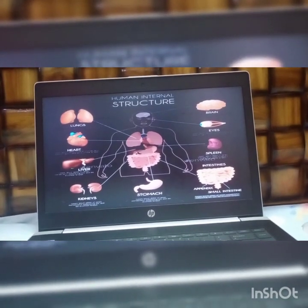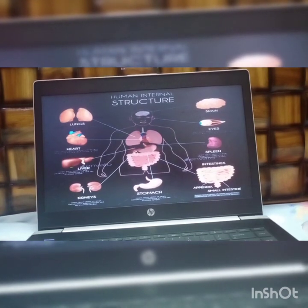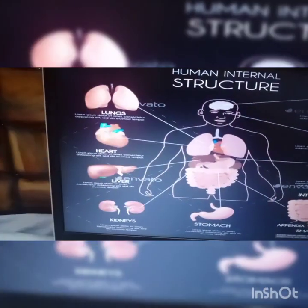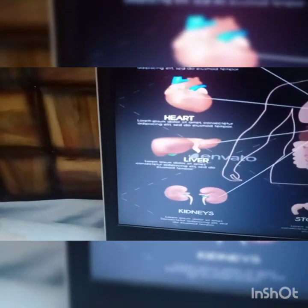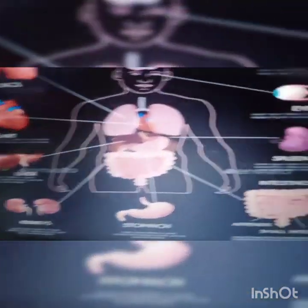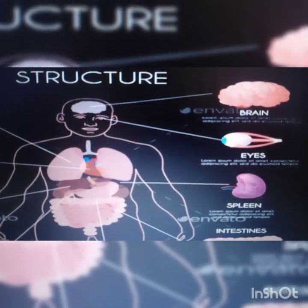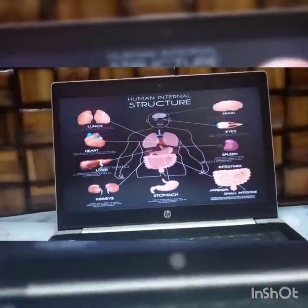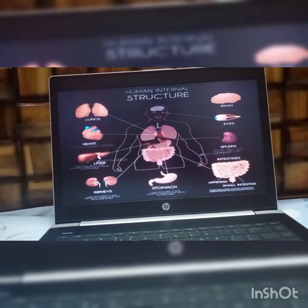For homework, follow today's session properly and try to draw all these internal organs in your notebook — lungs, heart, liver, kidney, stomach, intestine, spleen, and brain. Try to draw them. That's it for today. Thank you, be at your home and be safe.